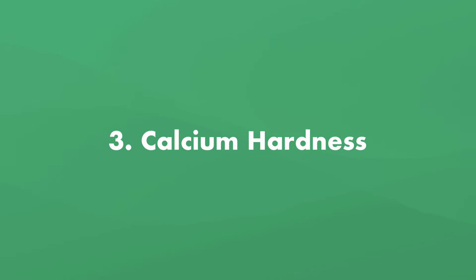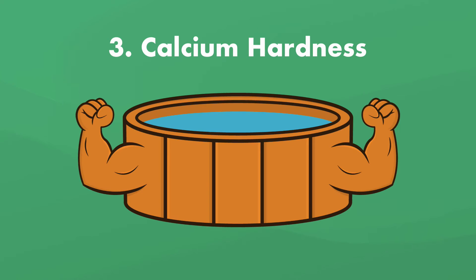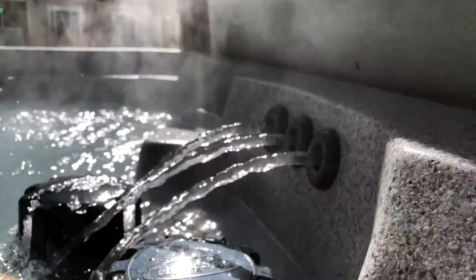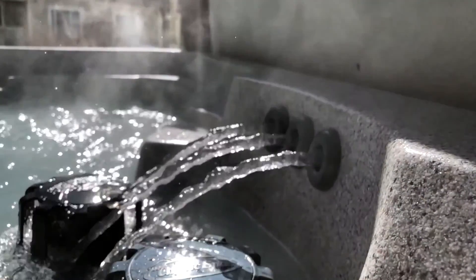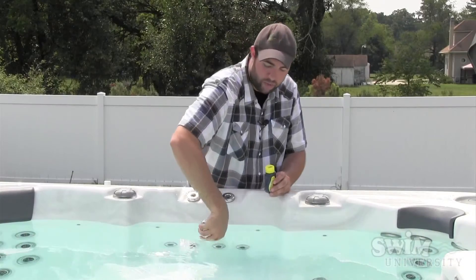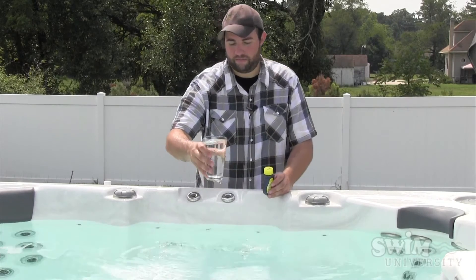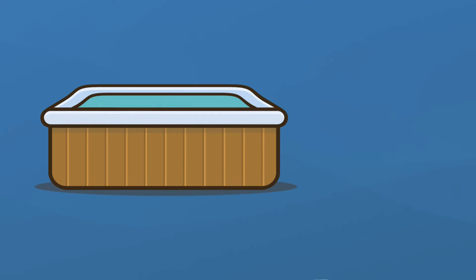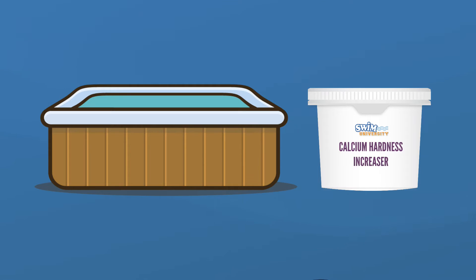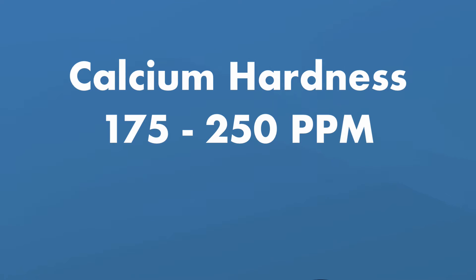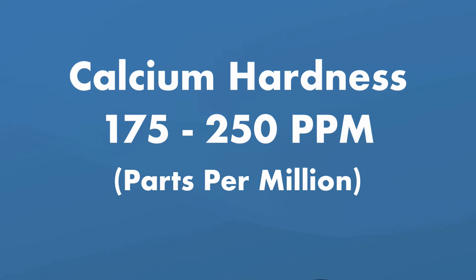Next up is calcium hardness — this is the measure of how hard the water in your hot tub is. If you live somewhere with hard water, you know how you can get calcium deposits on faucets and shower heads. You actually want the water in your hot tub to be a little bit on the harder side. If it's too soft, it can eat away at your hot tub shell, pipes, and other parts, slowly breaking them down over time. To keep the water hardness steady, you can add calcium hardness increaser. The ideal calcium hardness level is 175 to 250 parts per million.